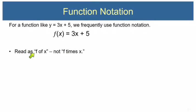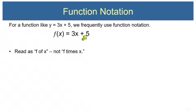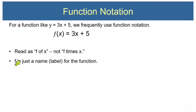We read this as f of x, not f times x. I know that when you see the parentheses, you probably think about multiplication. But in this case, this f is not a variable or a number — it's a label that indicates that this expression is going to be called f, and the variable in this expression is x.